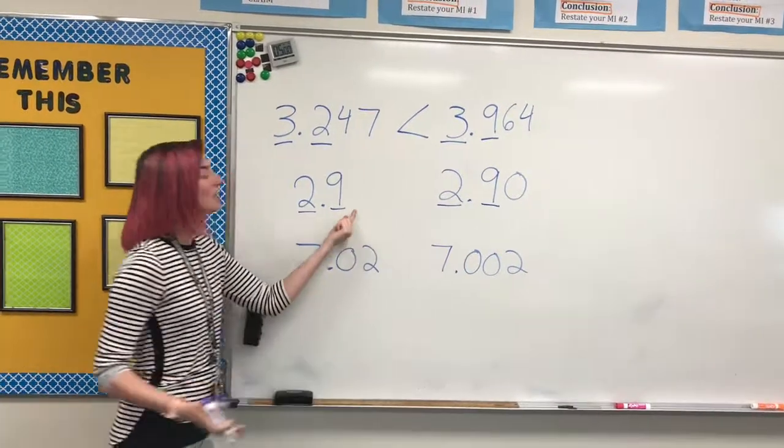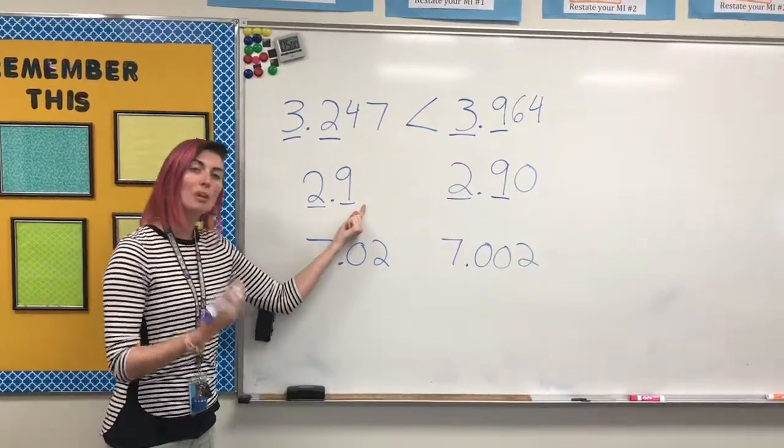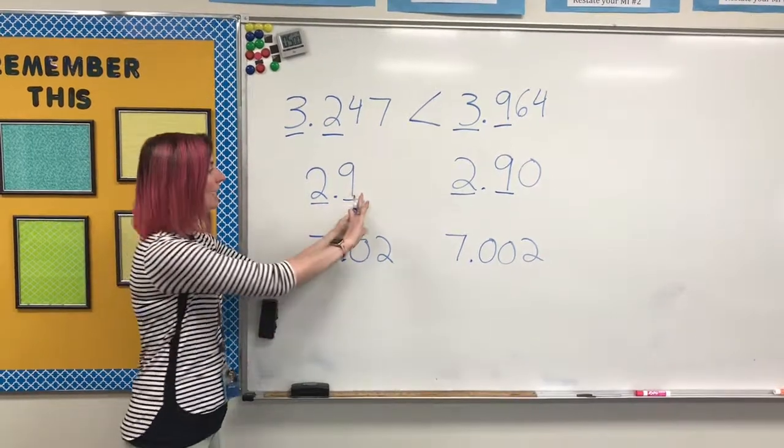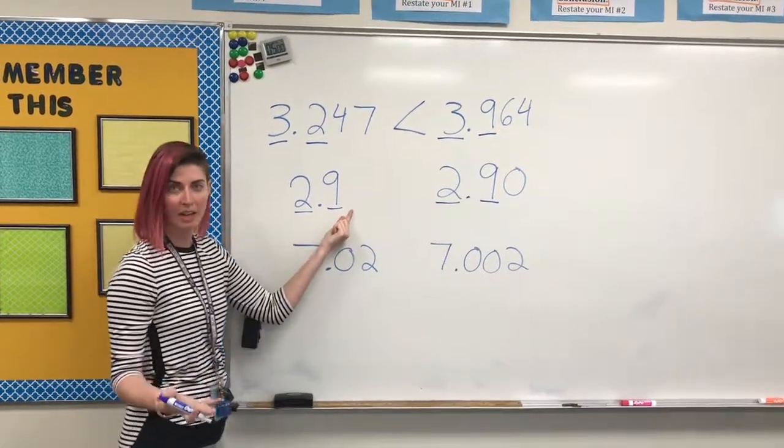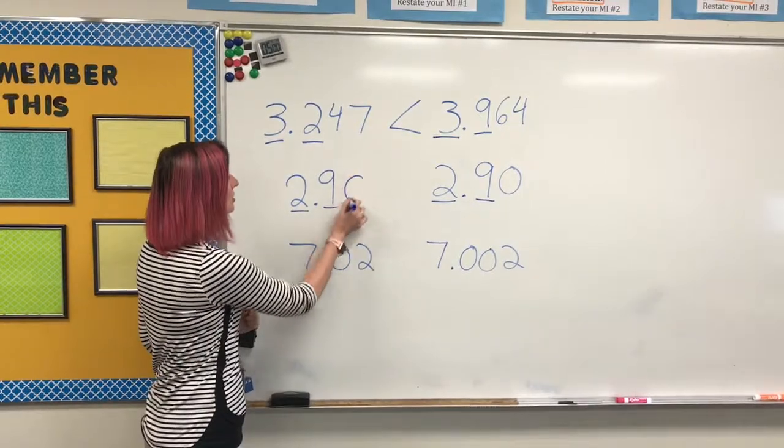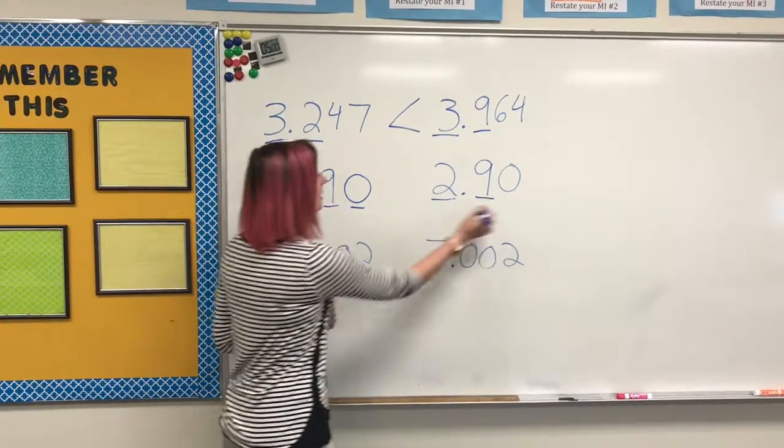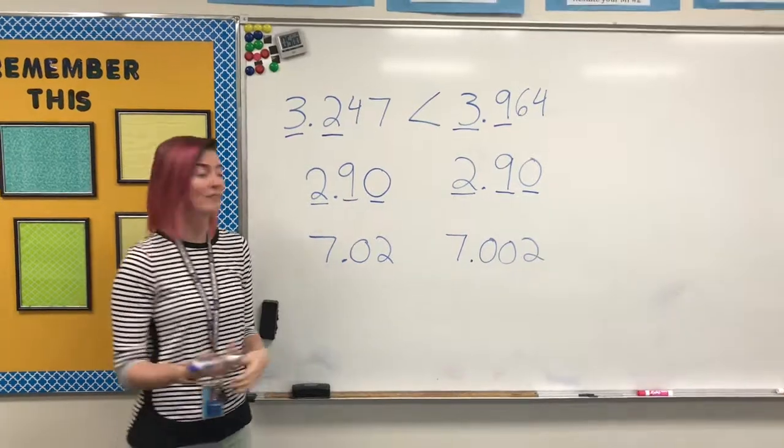Moving into the hundredths, but here there's no number. Whenever we're writing decimals, we can add as many zeros as we need behind the decimal to make our answers work out. So here I'm going to put another zero, and we end up with both of these numbers being equivalent.